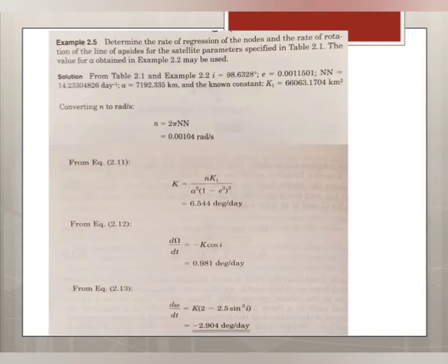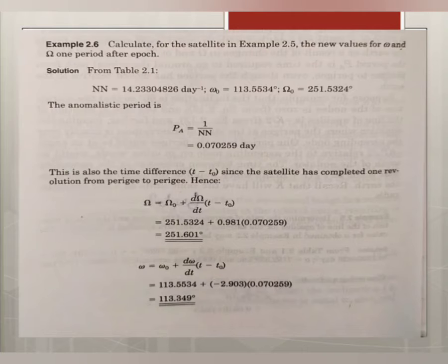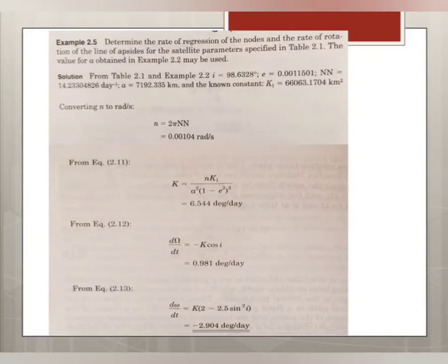What are the given data from the table? We can take the values from this table. To find dΩ/dt we should have capital K value, and for finding dω/dt also we have to find capital K value.